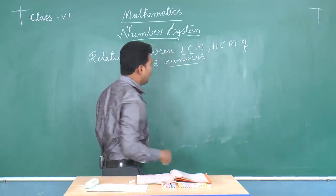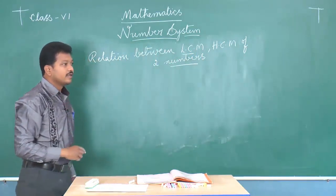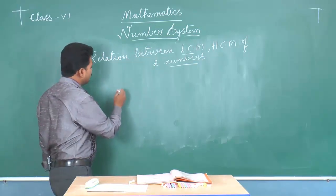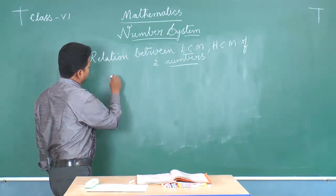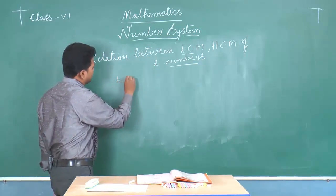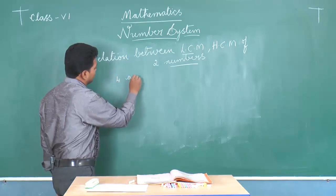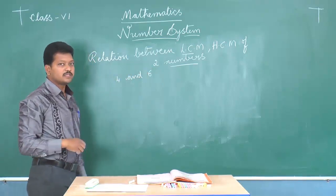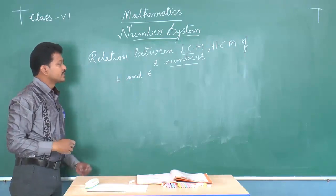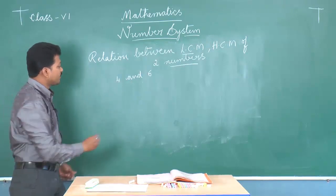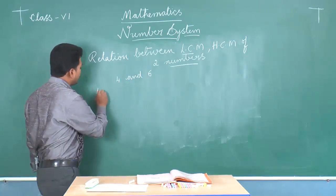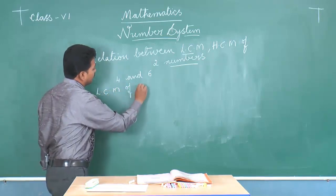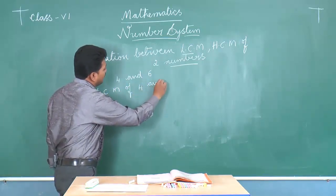Let me go with an example. Let me take the two numbers four and six. I have taken two smaller numbers: four and six. First, let us find the LCM using any method. LCM of four and six.